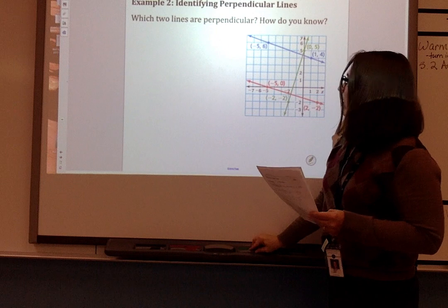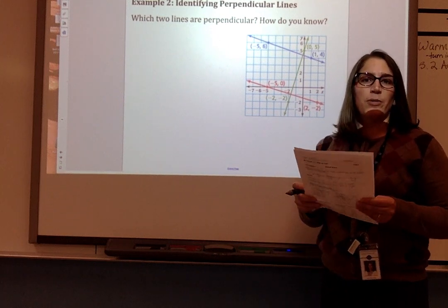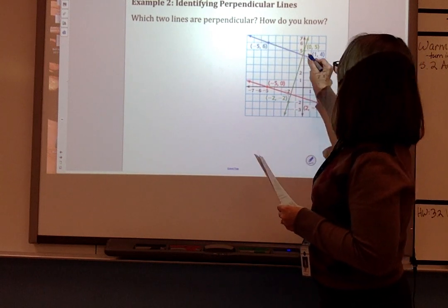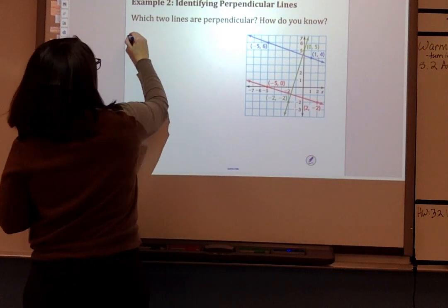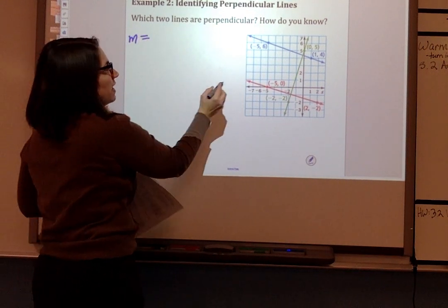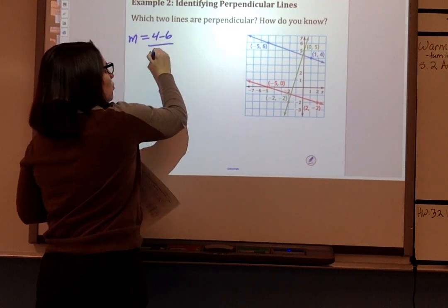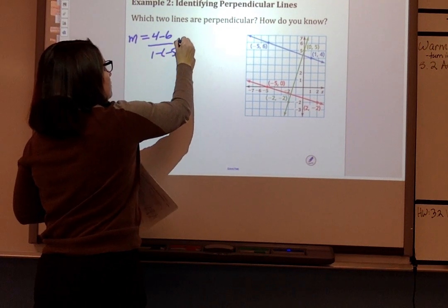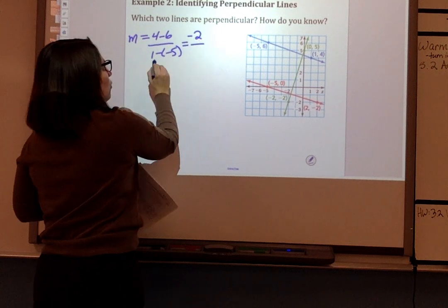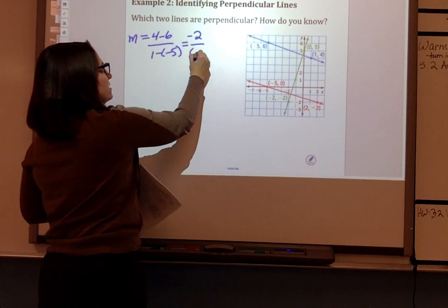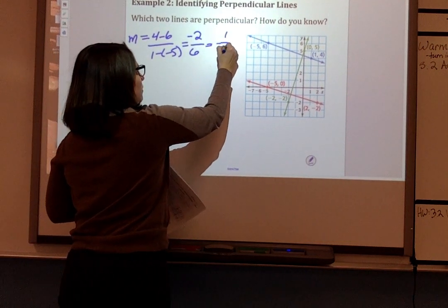So let's look at three lines and figure out which ones are perpendicular. For me, the blue one is this one on top. So let's find that one first. The slope of that line, let's do 4 minus 6 over 1 minus negative 5. So that's negative 2 over 1 minus negative 5 is 6. So that's negative 1 third.